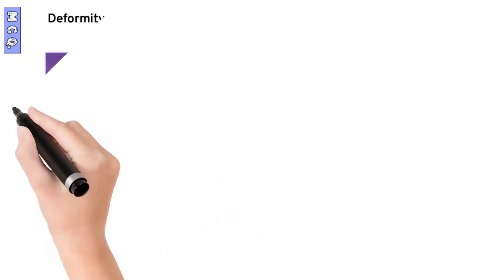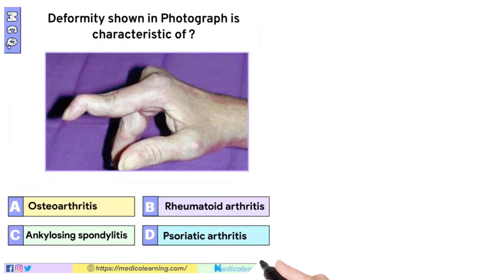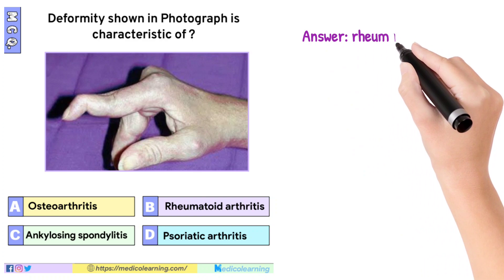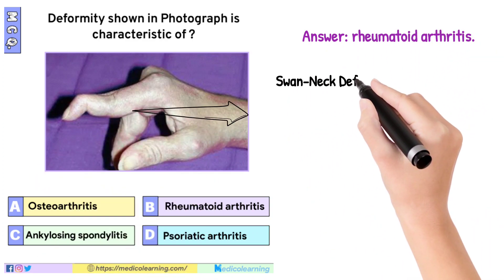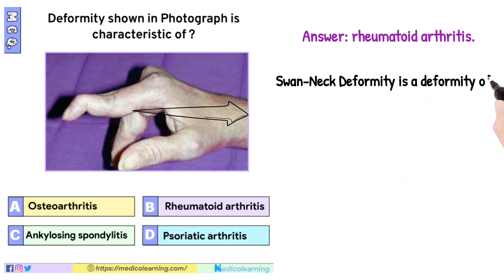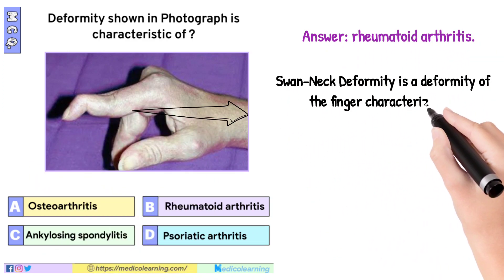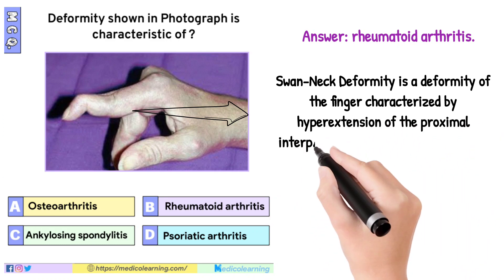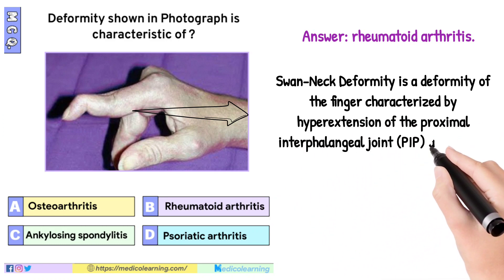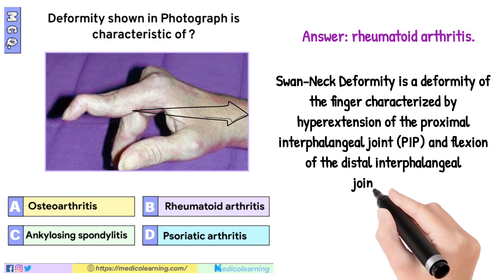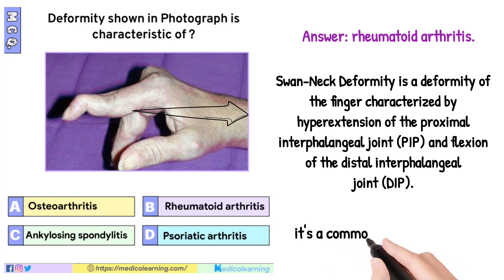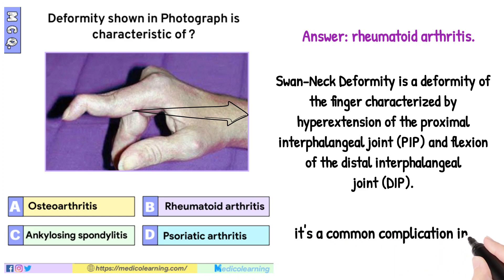In this question the answer is Rheumatoid arthritis. Swan neck deformity is a deformity of the finger characterized by hyperextension of the proximal interphalangeal joint and flexion of the distal interphalangeal joint. It is a common complication in rheumatoid arthritis.